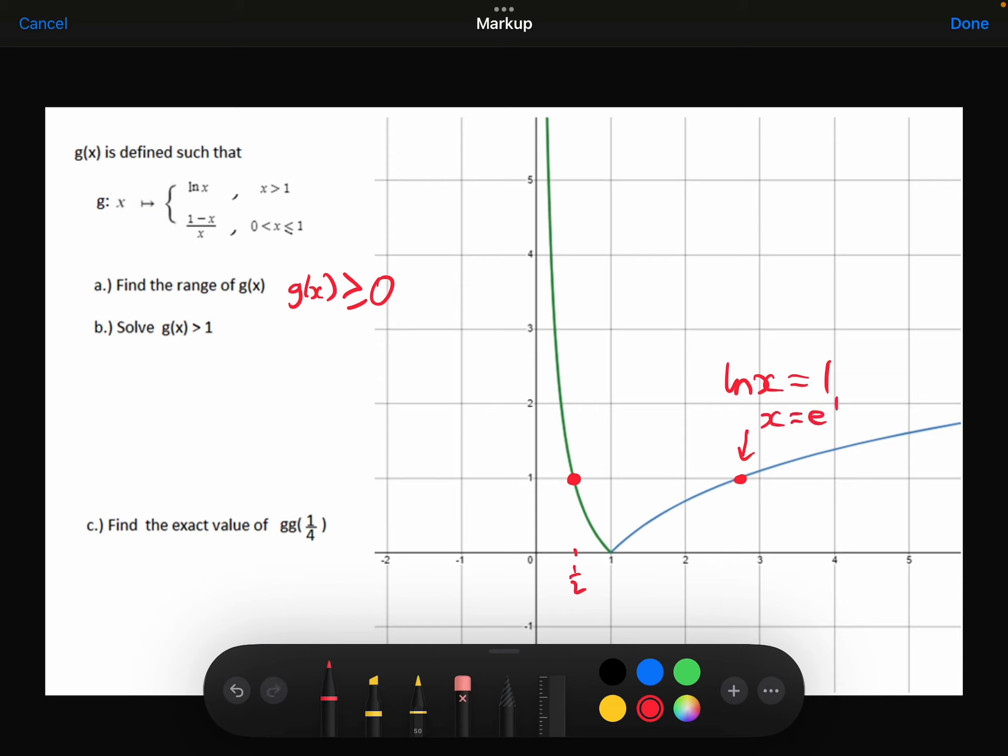So those are the two values where G of x is equal to 1, but I wanted where it's greater than 1, which is over here or down here. So that's going to be where x is greater than e, or where x is less than 1 half. It does need to be greater than 0 though, because my function isn't defined for negative values over here.